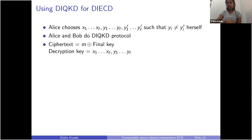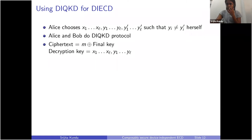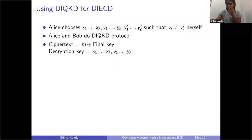We are going to consider an anchored version of the MSP game. How do we use this property? Alice is going to choose X1 to XL and Y1 to YL inputs herself. She's going to use X1 to XL and Y1 to YL for her actual key, but she's also going to choose Y'1 to Y'L such that each Yi is different from each Y'i. These Y'i's are going to be used when she needs Bob to delete the ciphertext. If Alice wants Bob to delete the ciphertext, she sends the Y' primes to Bob.